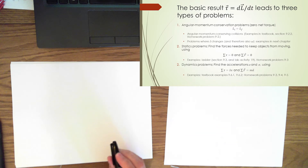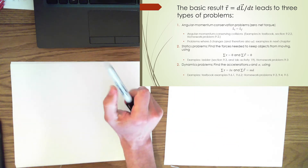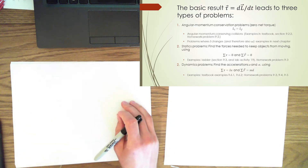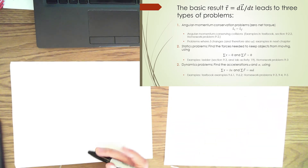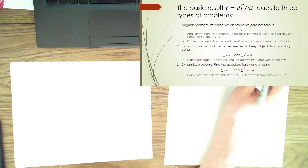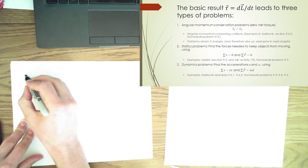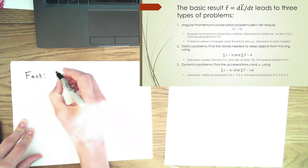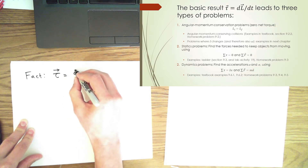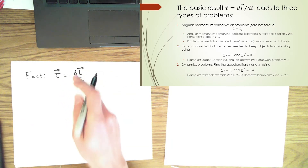All these different approaches — one, two, and three — stem from or can be derived from the basic relationship of torque being equal to the change in momentum with respect to time: tau equals dL/dt. That is going to be useful in various types of problems, and all these problems stem from this basic fact.